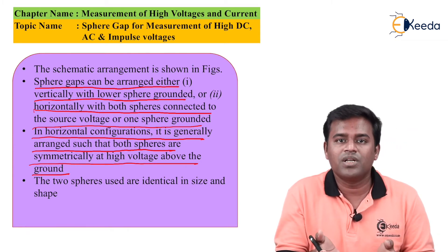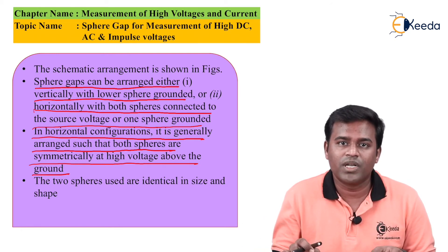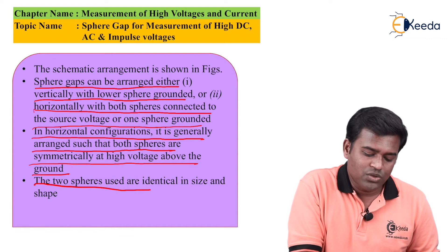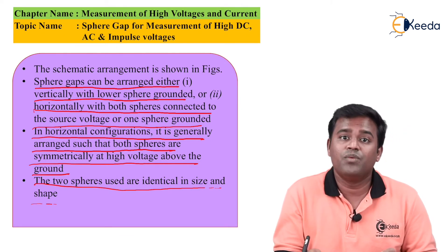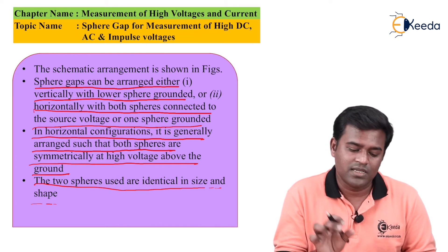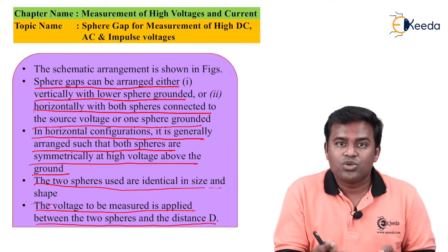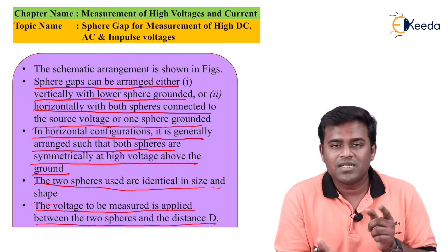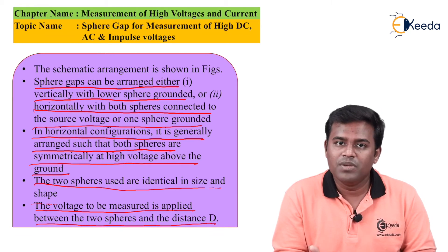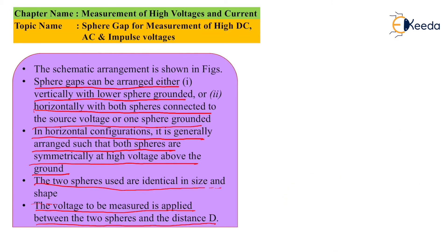In the horizontal connection, the same voltage is provided to both spheres, which are positioned above the ground level. The two spheres used are identical in size and shape. The voltage to be measured is applied between the two spheres, and the distance D is also subject to a specific condition. With the same size, same shape, and distance condition, we can obtain the peak voltage value.